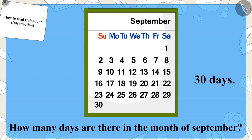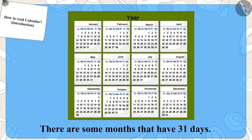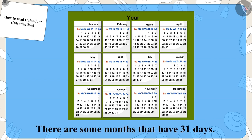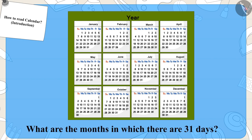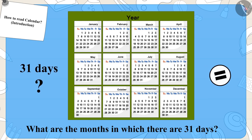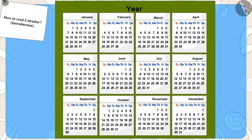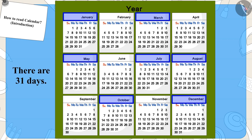Children, do you know that not all months have 30 days? There are some months that have 31 days. Can you tell by looking at the calendar which months have 31 days in them? If you want, you can pause the video to find the answer. Yes — January, March, May, July, August, October, and December have 31 days.